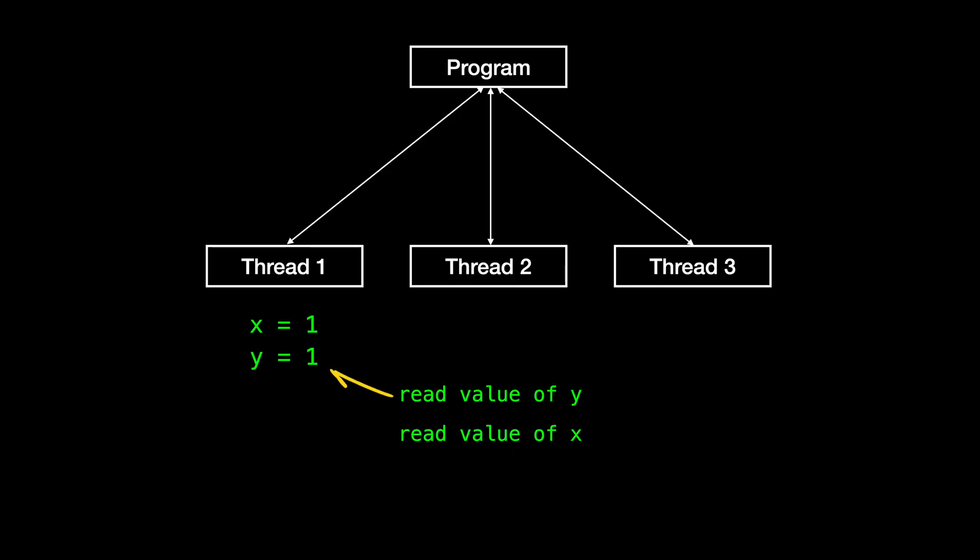Logically it feels like if thread two sees y equals one, then it must also see x equals one. But in reality, that's not guaranteed. Why? Because most CPUs reorder instructions at runtime.